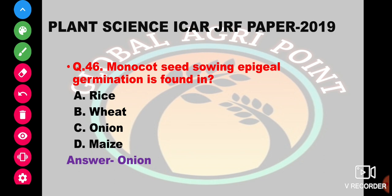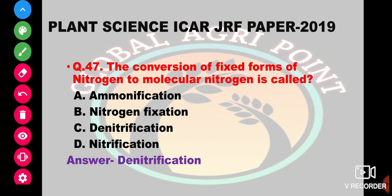Monocot seeds showing epigeal germination: most monocot seeds show hypogeal germination. The exception is onion. In the options, rice, wheat, and maize show epigeal germination type.